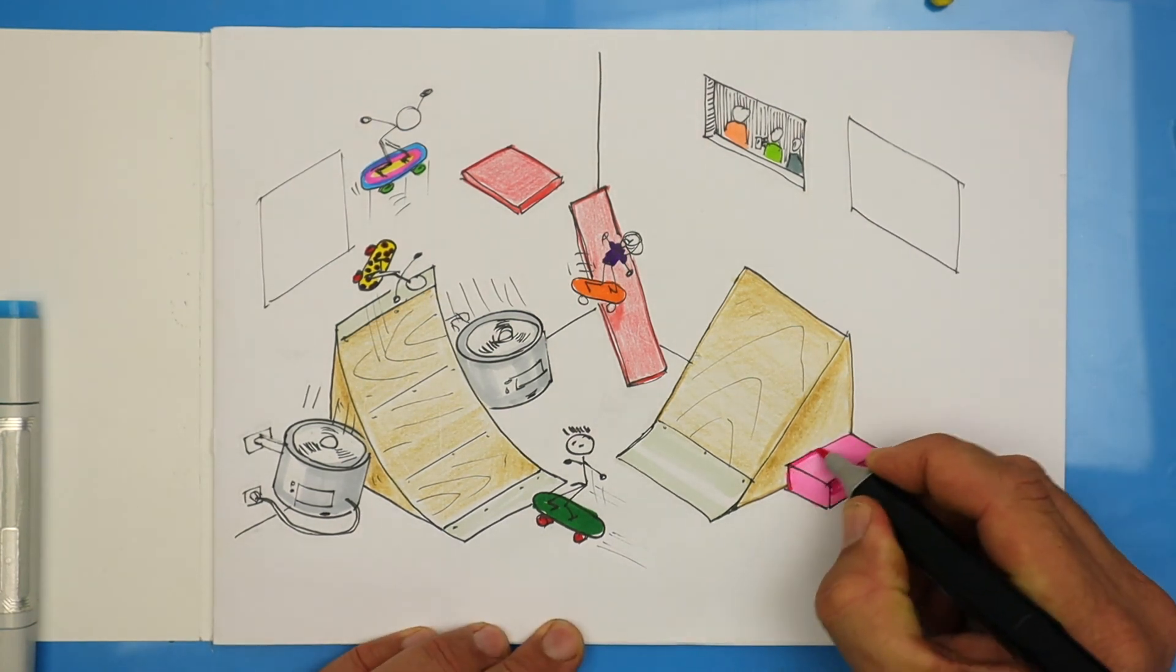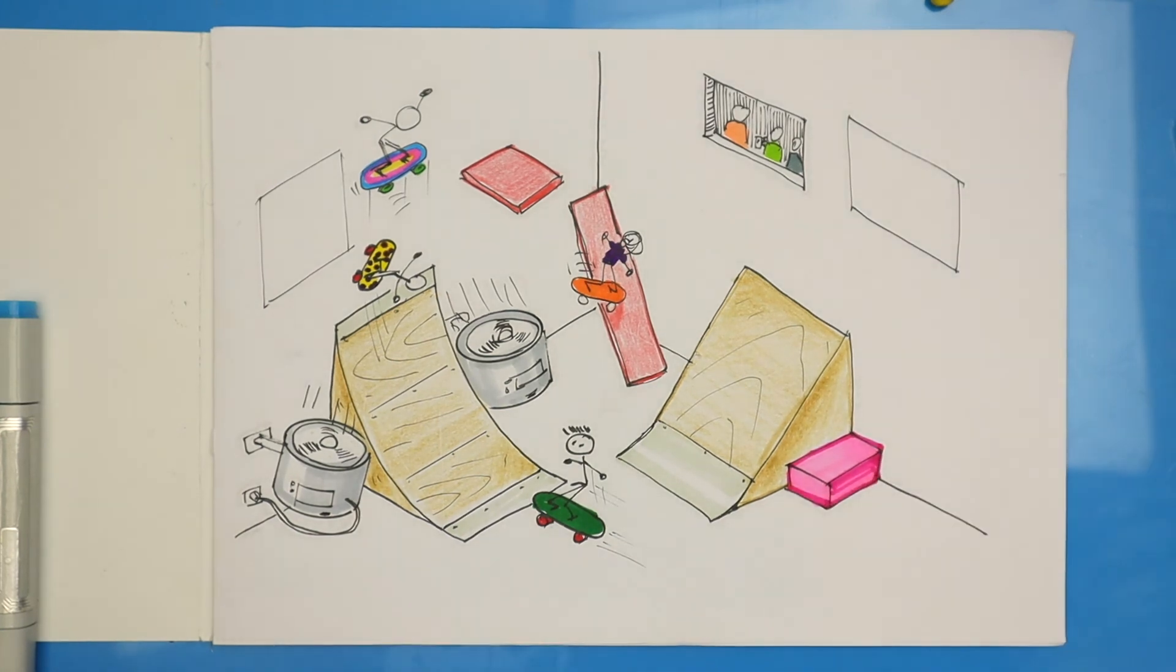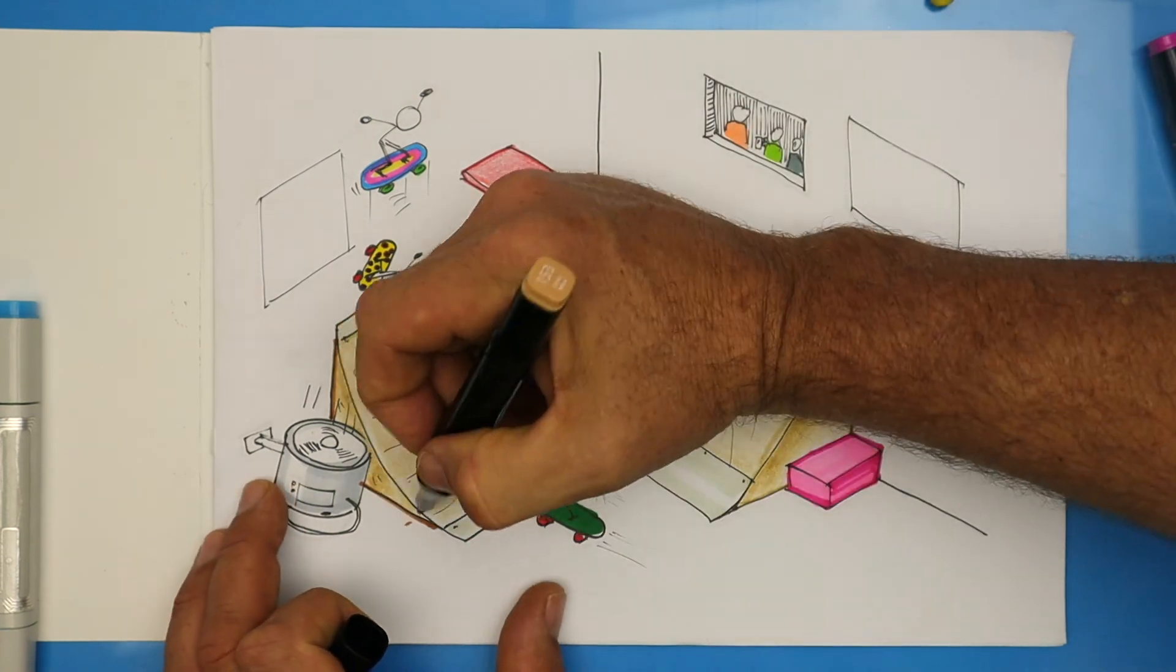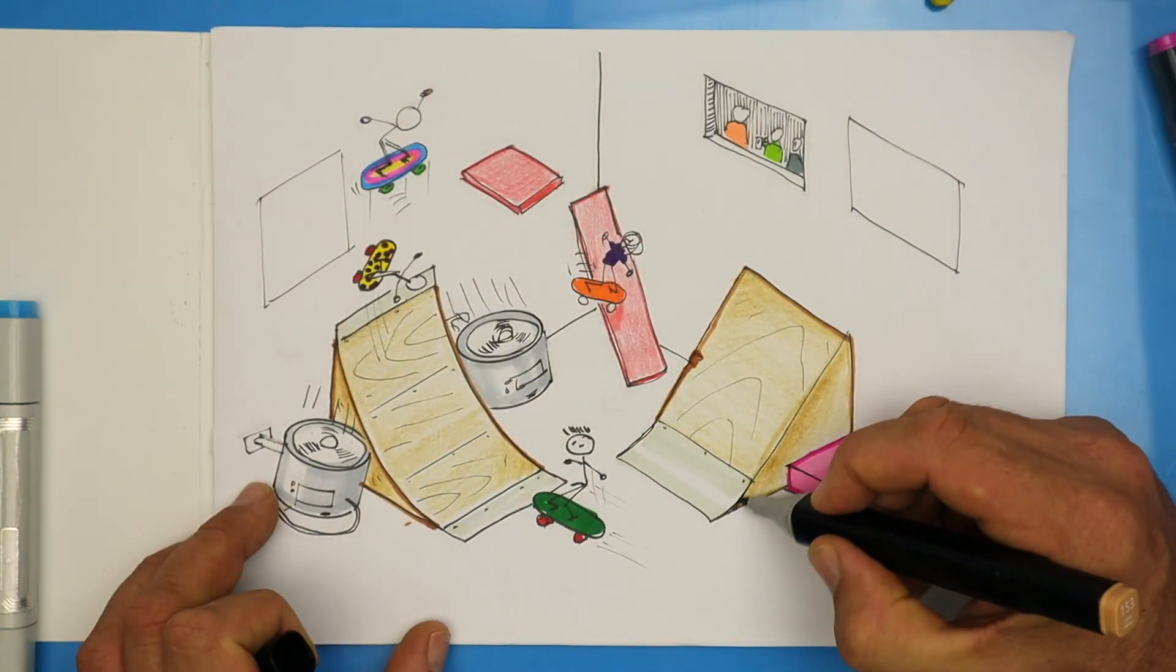Now choose a texter in the same color as each object and go around the outside. I'm going to do the same thing with these ramps. It helps to make each object stand out in the drawing.